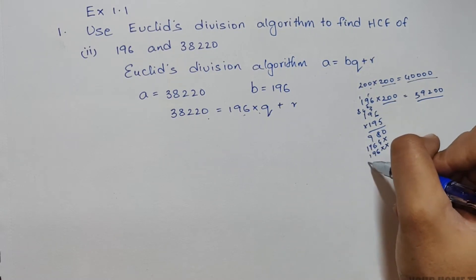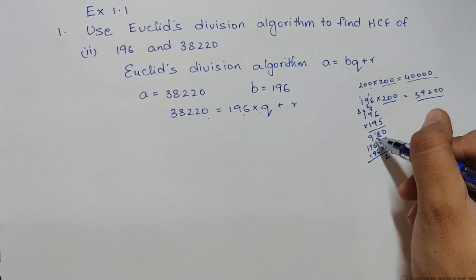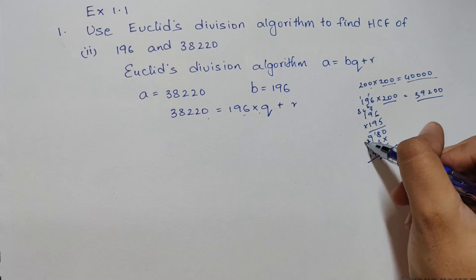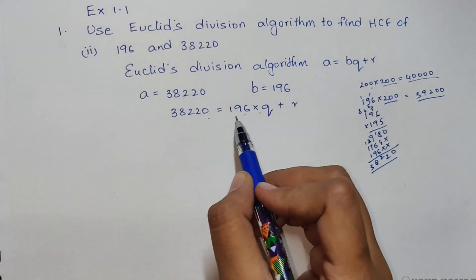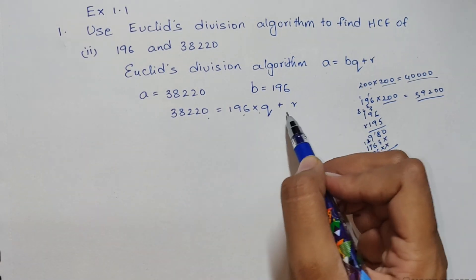I like to go with the old school method—it's much easier and more convenient. 10 plus 12 is 18... We got the number. So, 196 times 195 gives us 38,220 with no remainder.